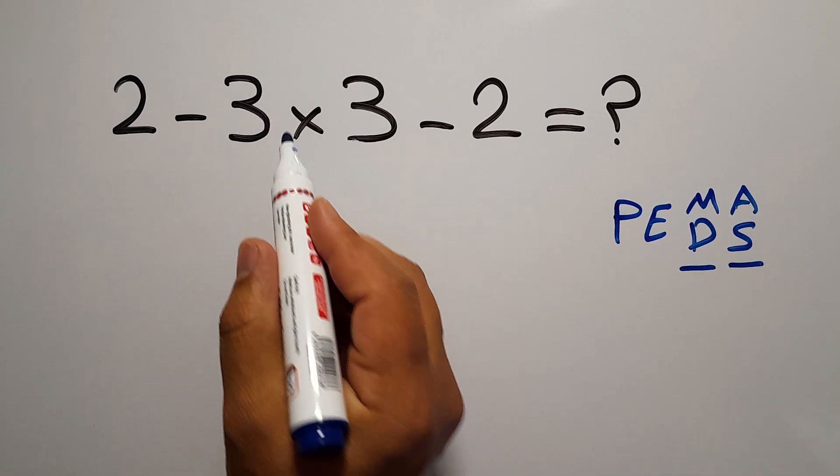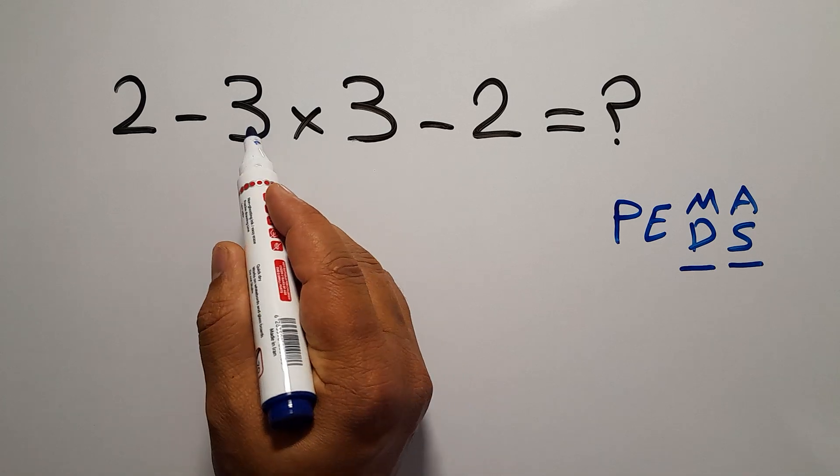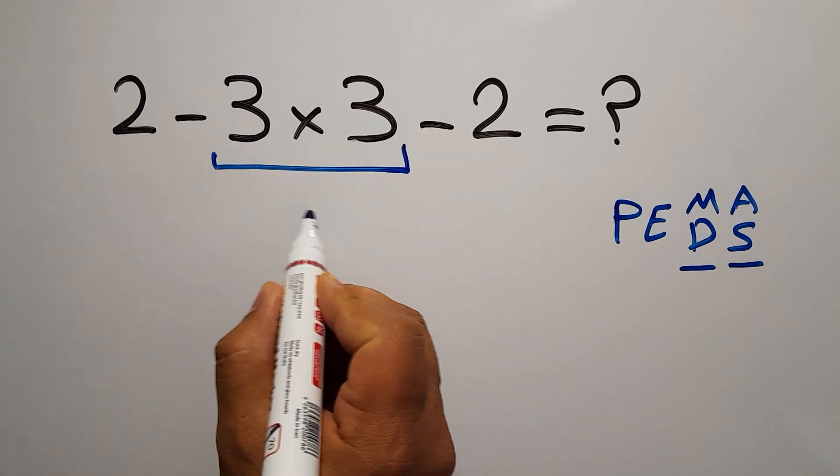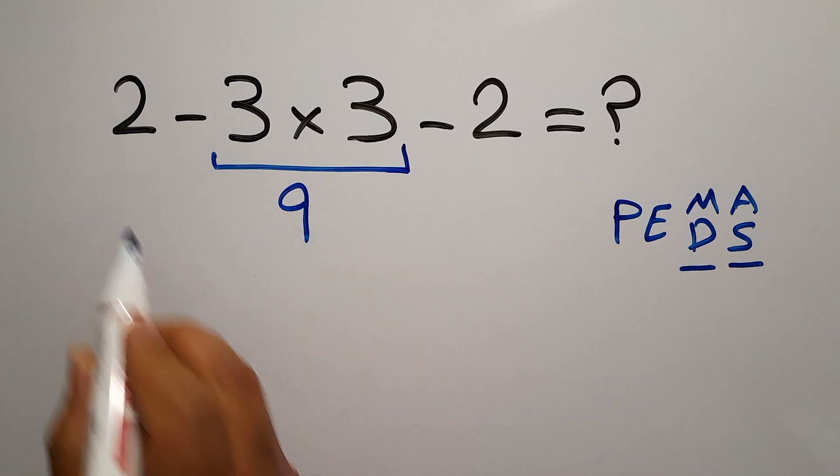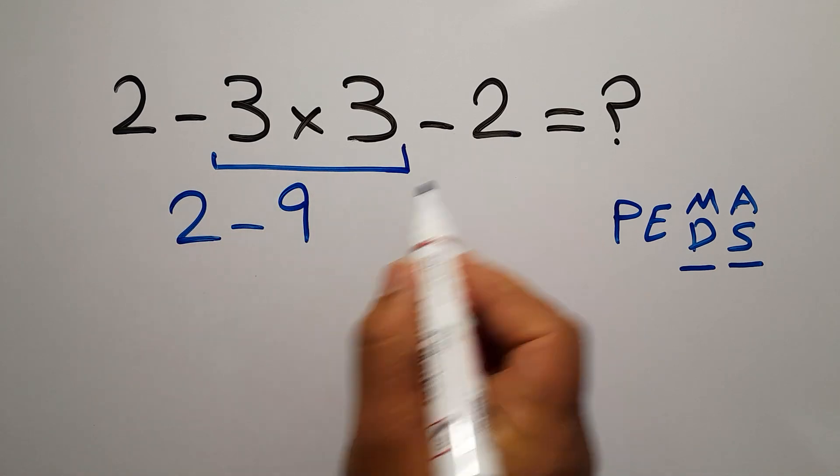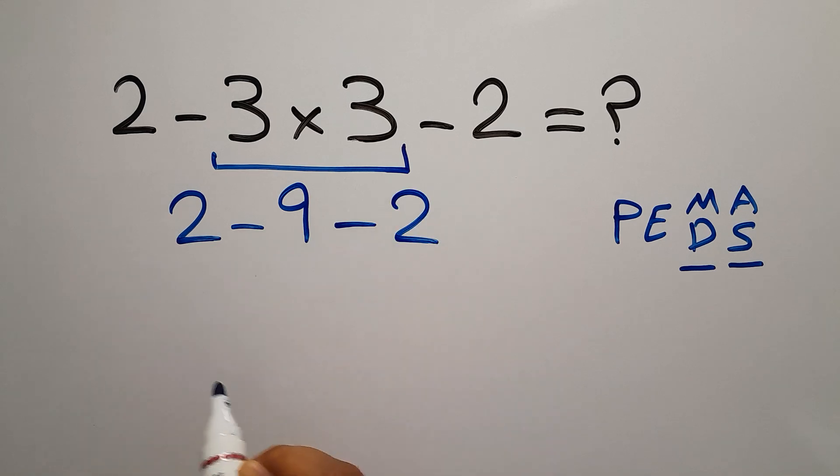So, first we have to do this multiplication. Three times three, which equals nine. So, we have two minus nine, minus two.